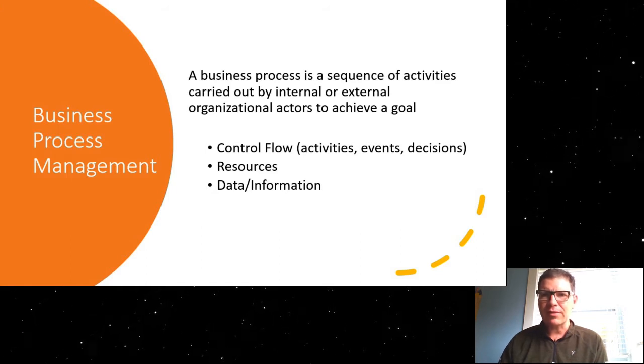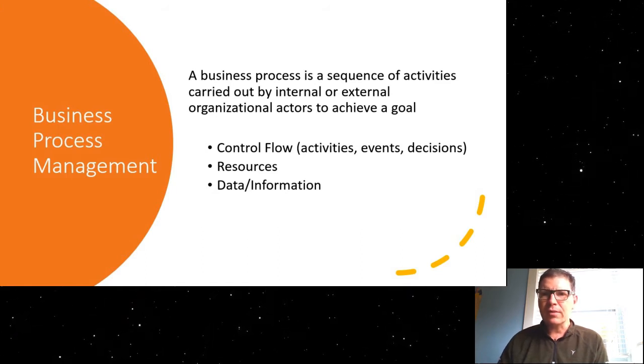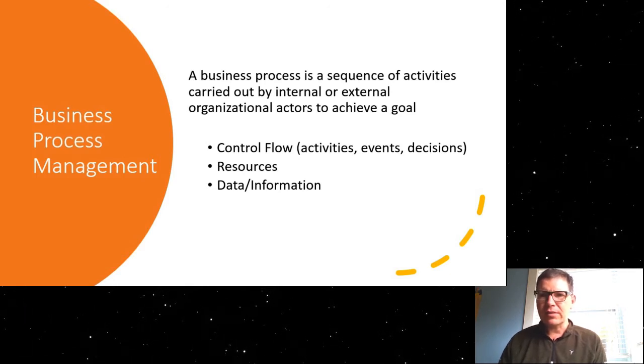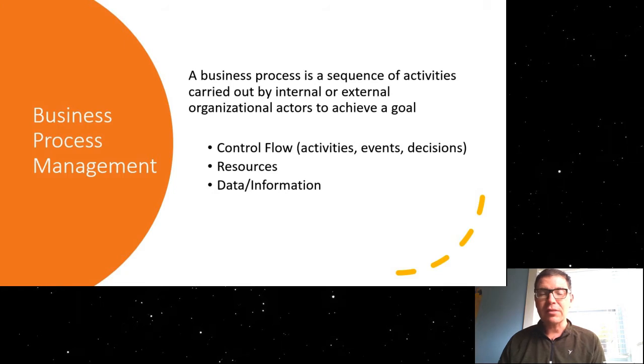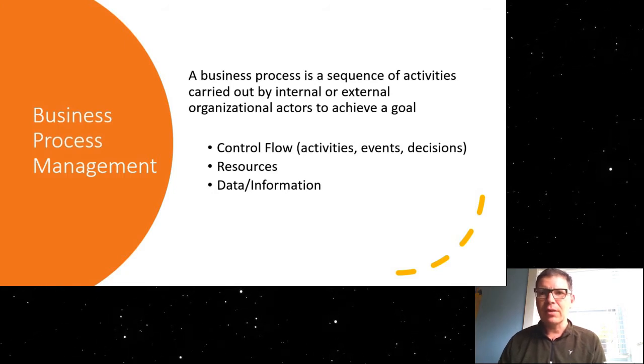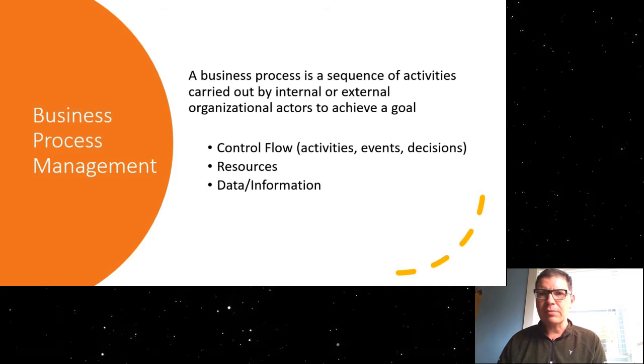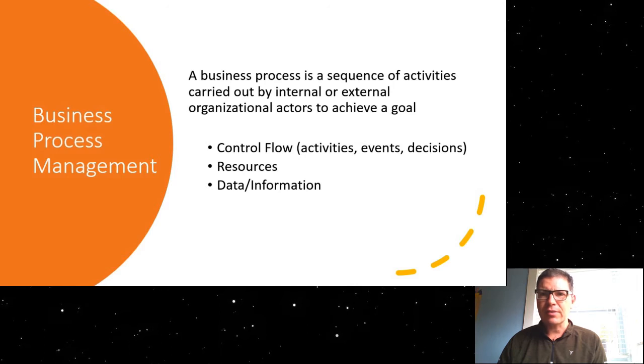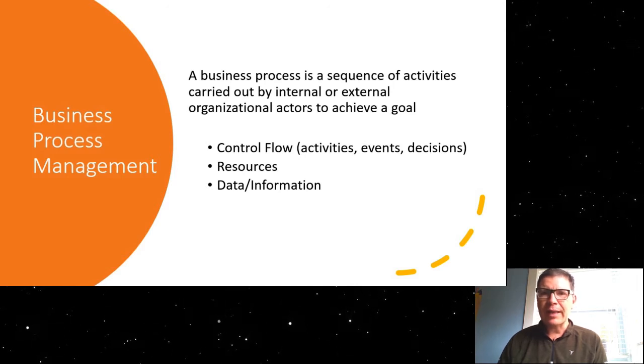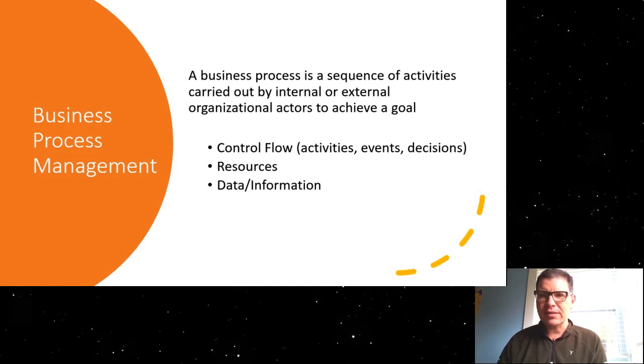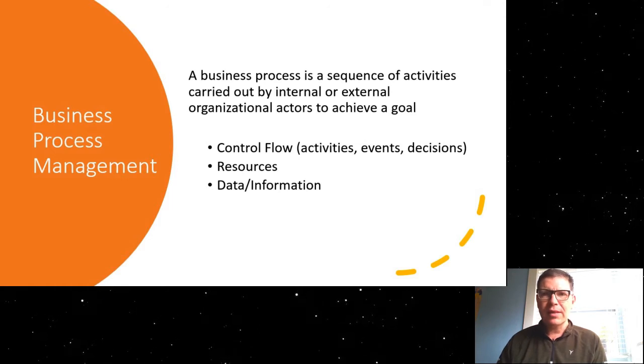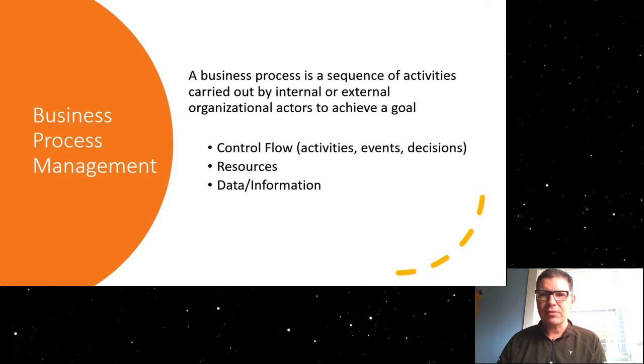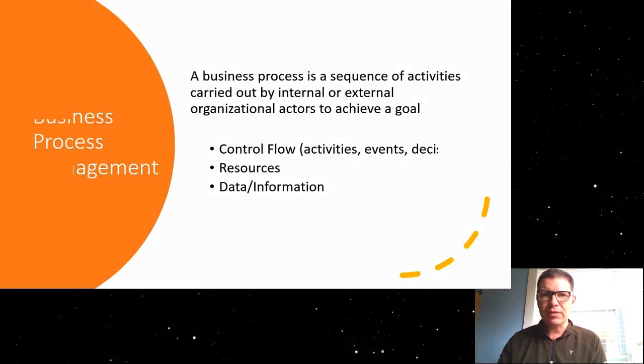We can also look at a process from the resource perspective, so who carries out what activities, and we might be interested in specific people, or we might be interested in roles or departments, or we might be interested in different information systems that carry out or execute any of these activities. And the third perspective on a process is the data or information that flows through the process, the information that is used to carry out specific activities, or the information that is being produced by certain activities.